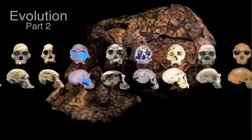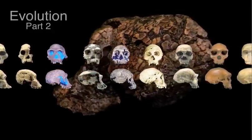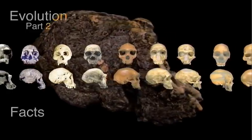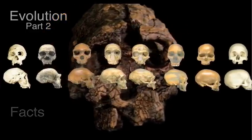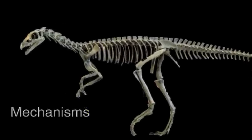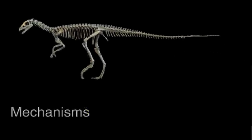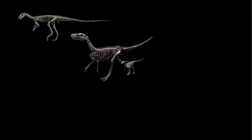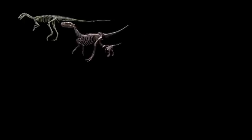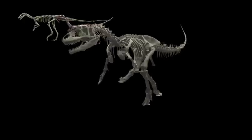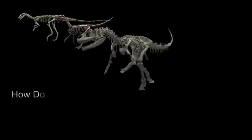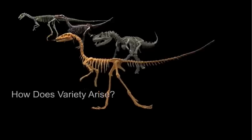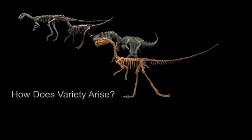In part one of our story of evolution, we demonstrated the facts of evolution. In part two, we will explore the mechanisms. And to do that, we need to ask and answer just two questions: How does variety arise in the genomes of individuals in a group? And how does that variety give rise to new species?